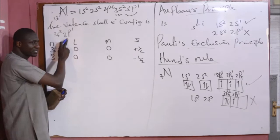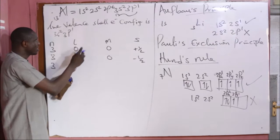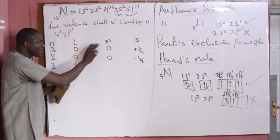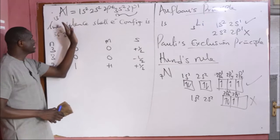For the 3p electron, the principal quantum number is still n = 3, and there is a single electron. Since the subshell is p, l = 1. The magnetic quantum number m can be +1, 0, or −1, so we can assign m = +1. We assume the electron spins up, so s = +½. Because there are three valence electrons, there are three possible sets of four quantum numbers.